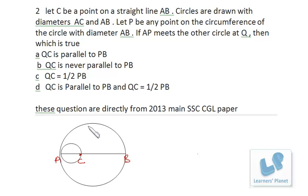Now P is any point on the circumference of the circle with diameter AB. I suppose this is P, right. Now if AP meets the other circle at Q, I join AP. Now this point is Q, right. Now we have to find out the relationship between QC and PB.